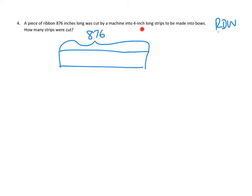Cutting the machine into four inch long strips to be made into bows. How many strips were cut? Oh, I see. So, basically, if we think that there's a four inch long strip, then there's a whole bunch of these four inch long strips, but we don't know exactly how many, that use up this 876 inch long piece.